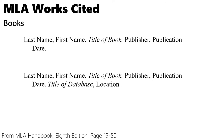Now let's look at citing books. If you have a hard copy print book, it's very easy to cite. All you need is the author's last name, comma, first name, period; the title of the book italicized, period; publisher, comma; publication date, period. Most of the information can be found on the first page or the back of the title page of the book — it'll tell you the publisher, publication date, and all that information.